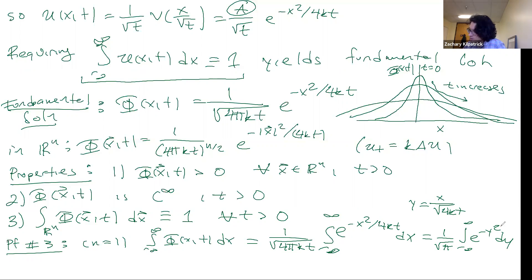And then this integral, you can use the polar coordinates trick in order to compute it's the square root of pi, and so we get that this is equal to 1.